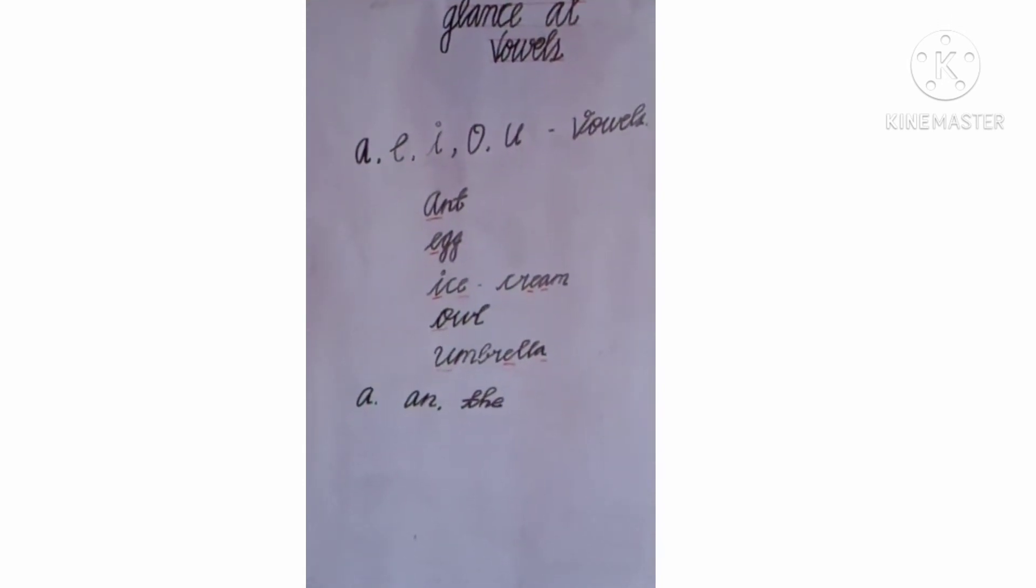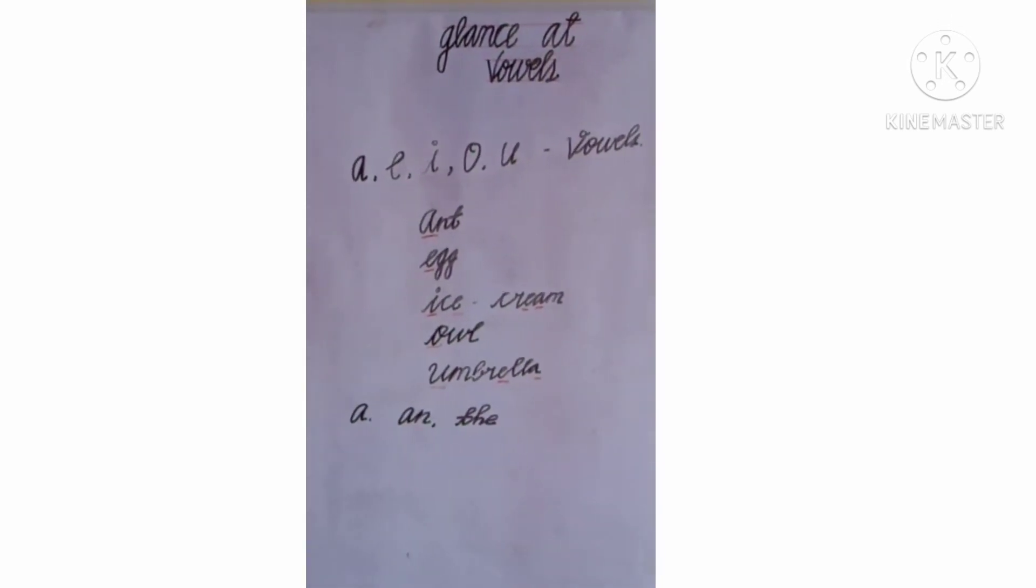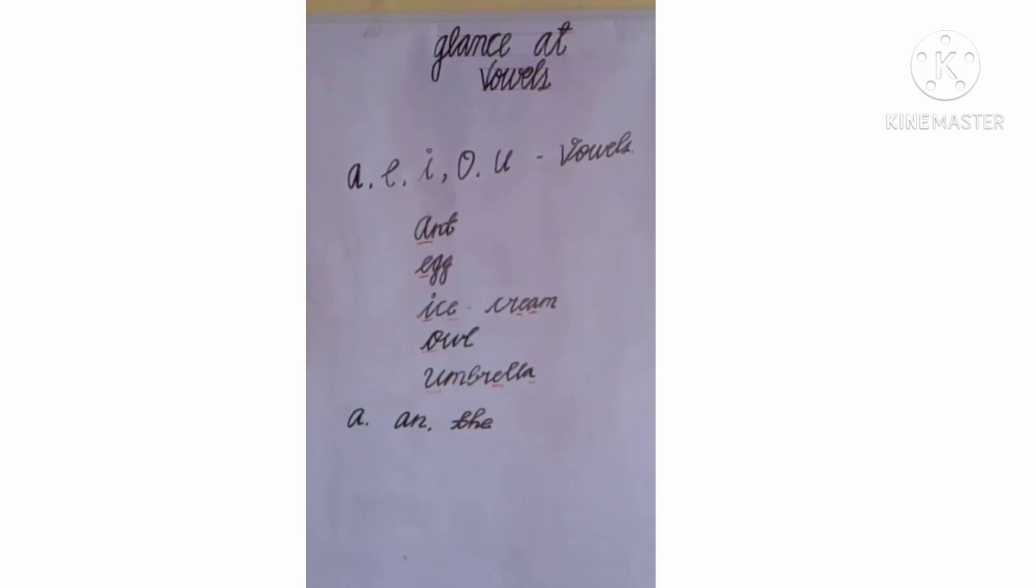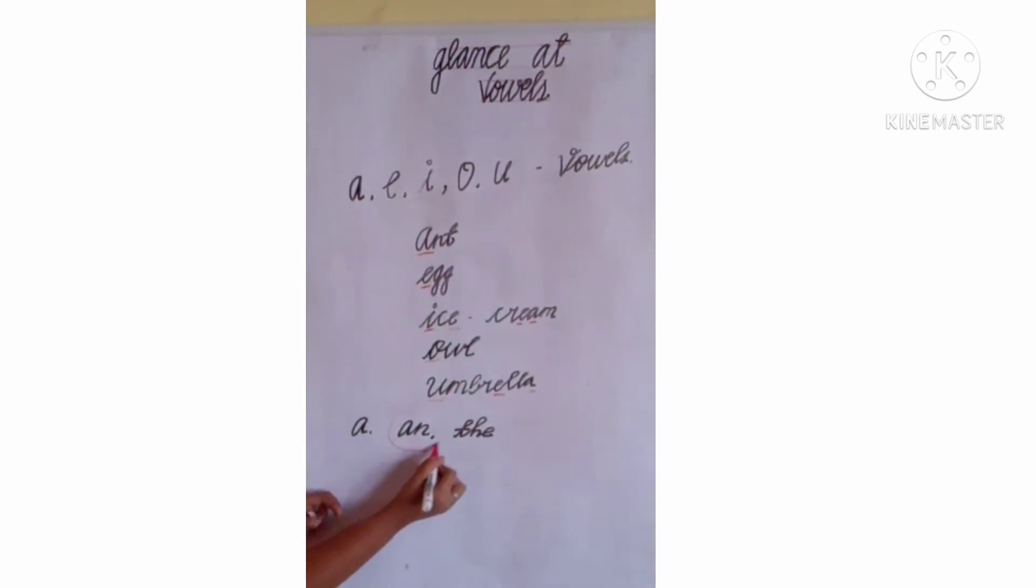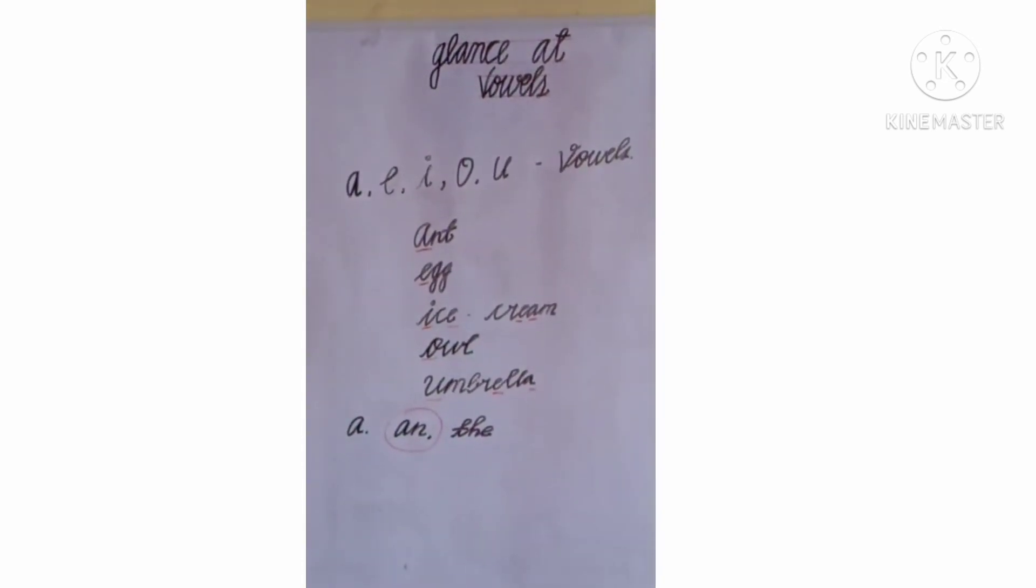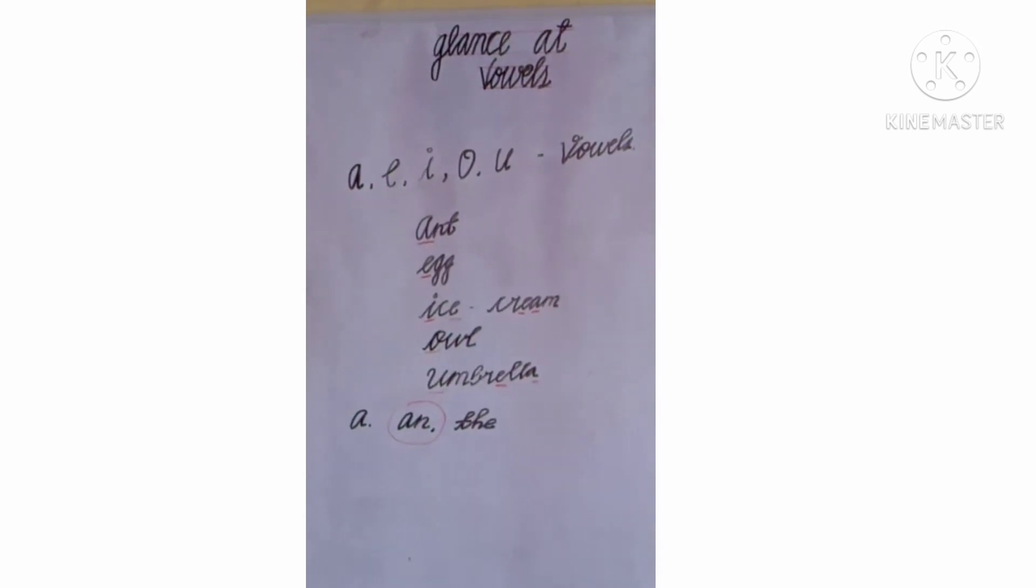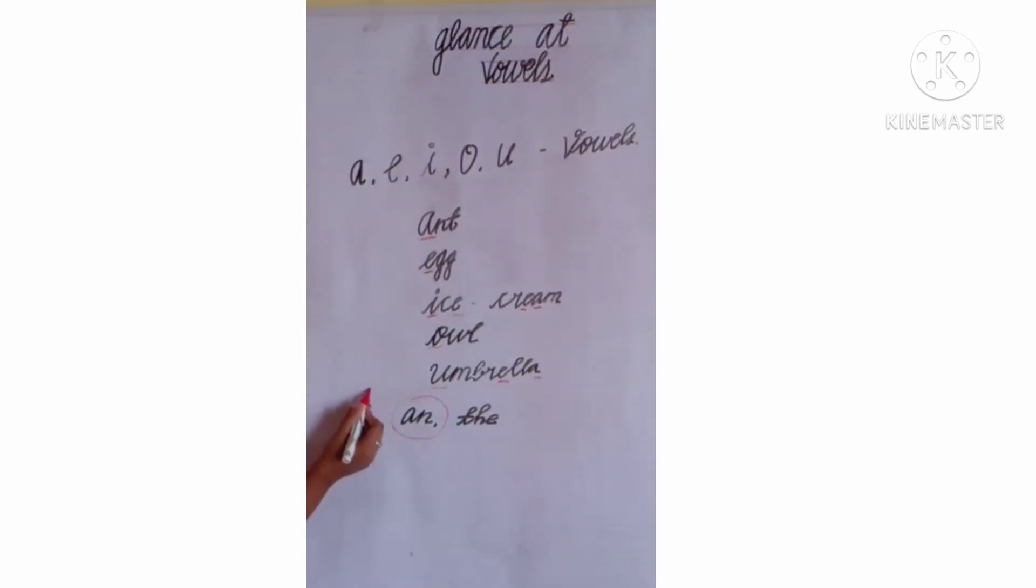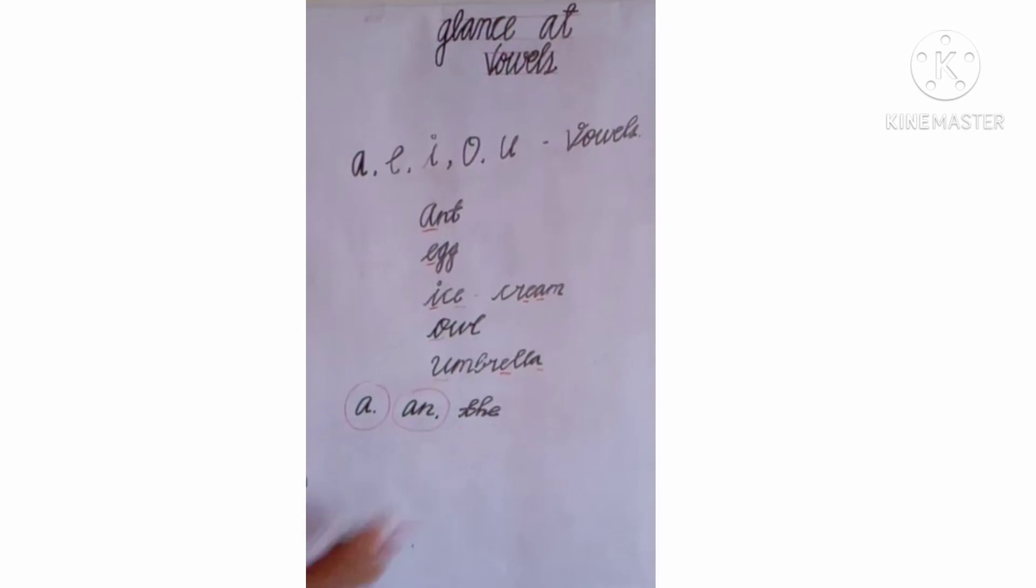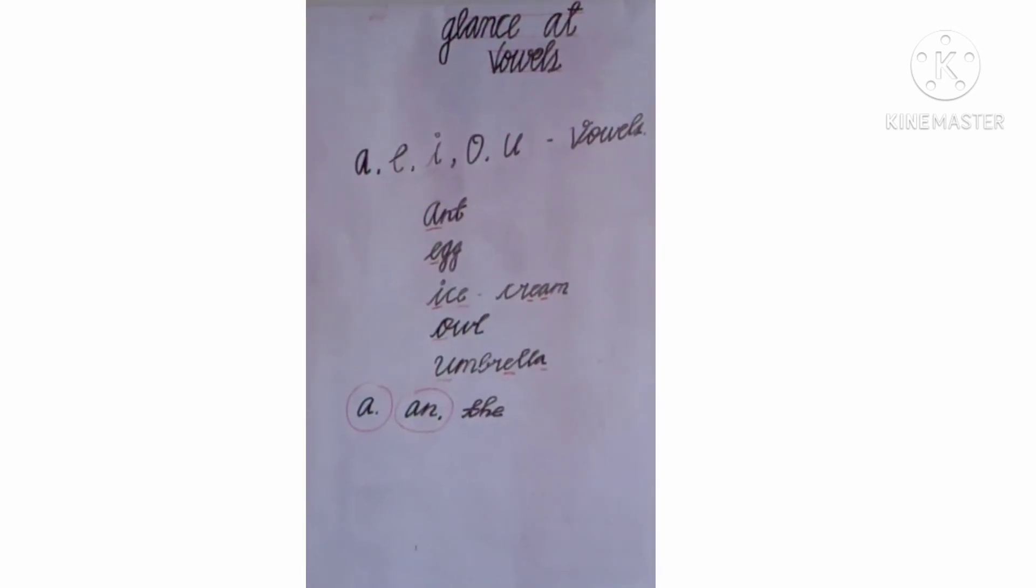Now, which article is going to be used in vowel words? An. Look at here. An is going to be used in vowel words. And A is used in consonant words. And the is used in some of the words like the public places.